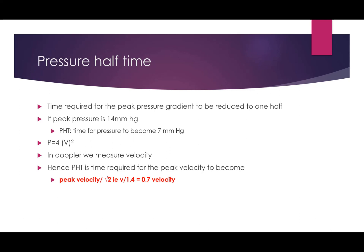In Doppler, we measure velocity, so we have to find out how velocity and pressure are related. As per Bernoulli's equation, P = 4 × V², that is, the peak pressure gradient is equal to 4 times velocity squared.